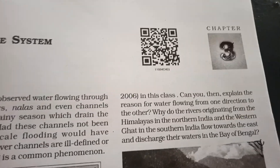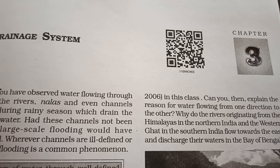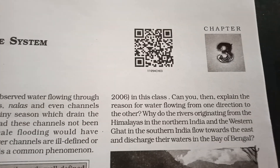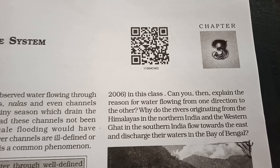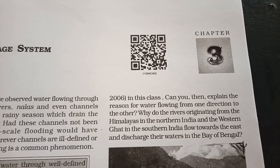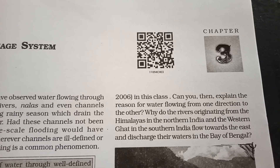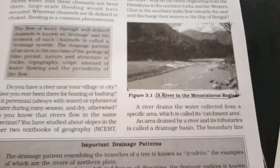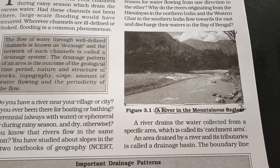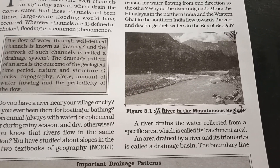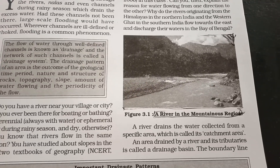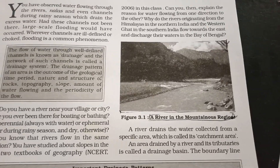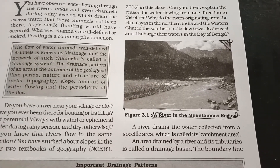The first question is: why do rivers originating from the Himalayas in Northern India and the Western Ghats in Southern India flow towards the east and discharge their waters into the Bay of Bengal? The water is collected from a specific area, which is called the catchment area. An area drained by a river and its tributaries is called a drainage basin. Students, underline these things — what is the catchment area and what is the drainage basin?